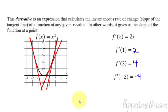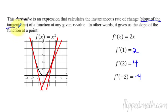So that's what the derivative does — it gives us the slope of the function at a specific point, or in other words, the slope of the tangent line. We're going to use this a thousand times this year. The derivative is really like half of what this year is about.